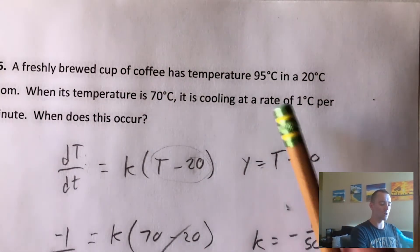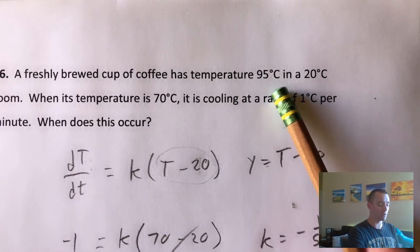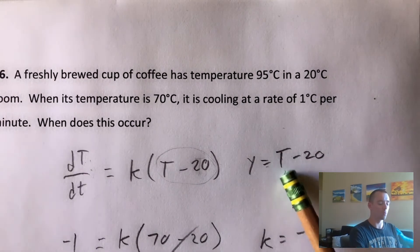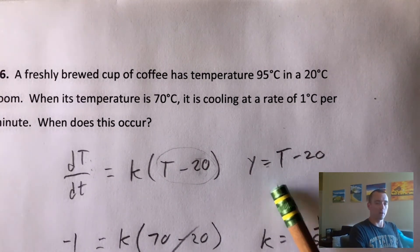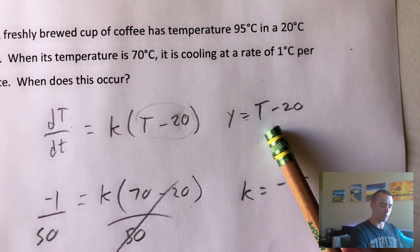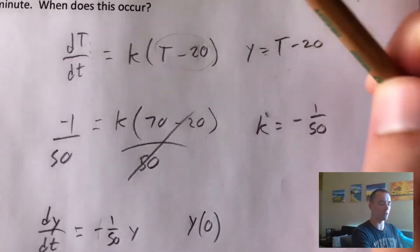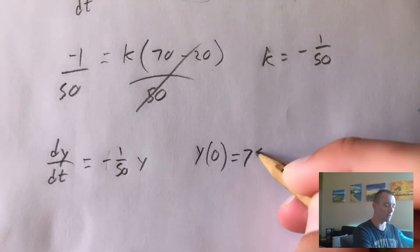Well, if we know that the coffee is 95 degrees when T is zero, when time is zero, we can figure out what Y is at that time by just plugging 95 in for our temperature here. So 95 minus 20 would be 75. So our initial Y value of this new equation is 75.